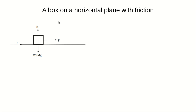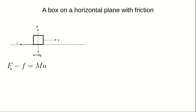For this scenario we have the reaction R, the weight W, an external force pulling the block sideways, and a friction force resulting from the rough surface of the plane. Resolving forces along the x-axis, we get F minus friction equals ma. So the equation takes the form: F minus frictional force equals ma. Since frictional force equals μR, this becomes F minus μR equals ma.